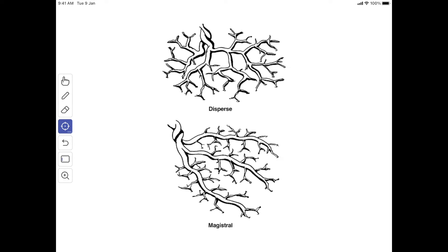According to the distribution of the umbilical arteries, it is classified into disperse type and magistral type. The dispersed type, the umbilical artery, they divide in dichotomous manner and they undergo successive reduction in caliber.